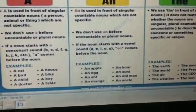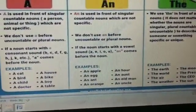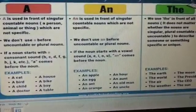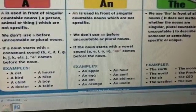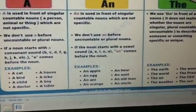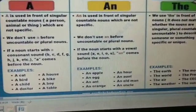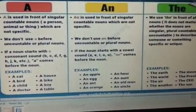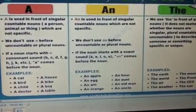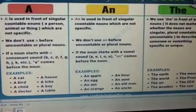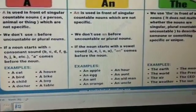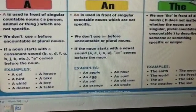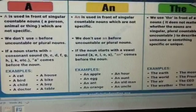The second one is 'an'. 'An' is used in front of singular countable nouns which are not specific. We don't use 'an' before uncountable or plural nouns. And we use 'an' with words that start with a vowel. For example: an apple, an egg, an ant, an orange, an hour — 'H' is silent in this.